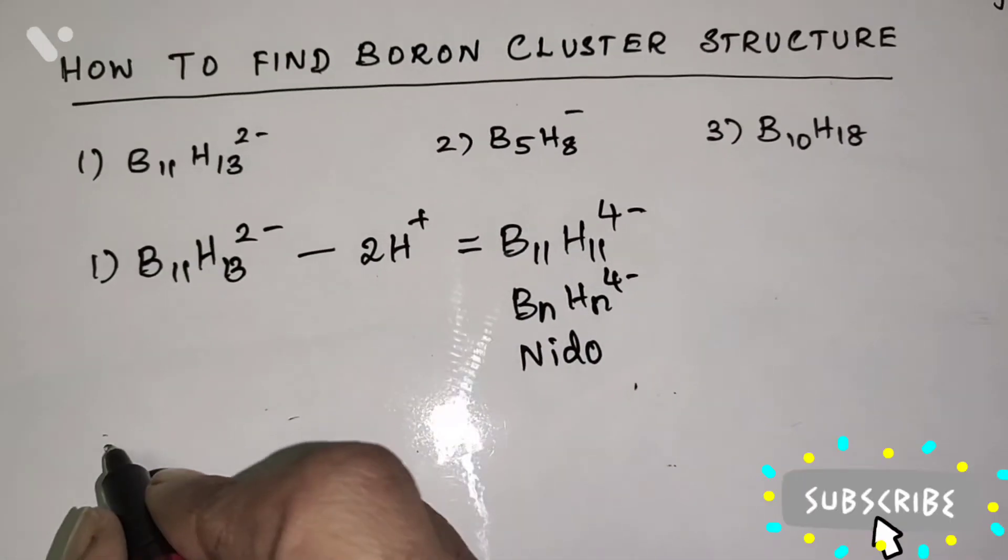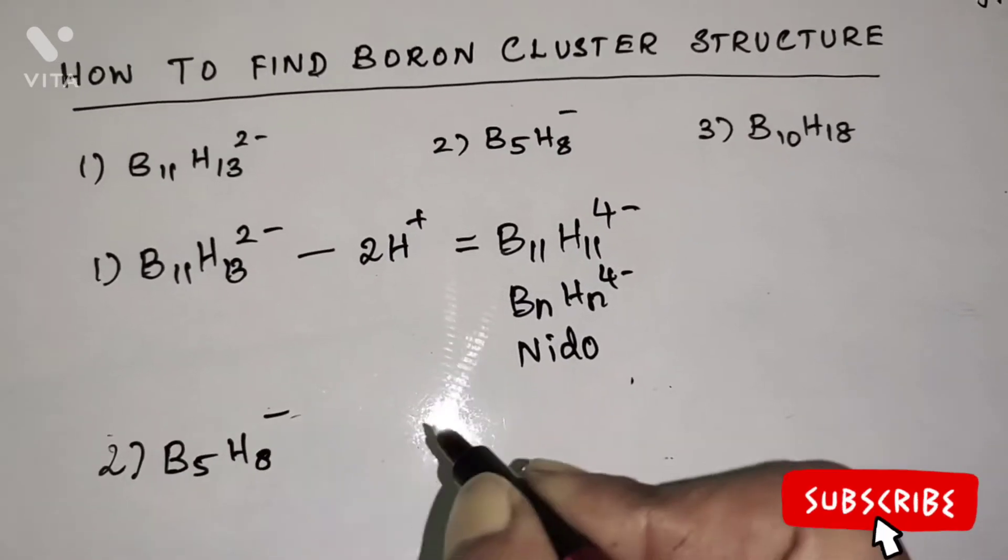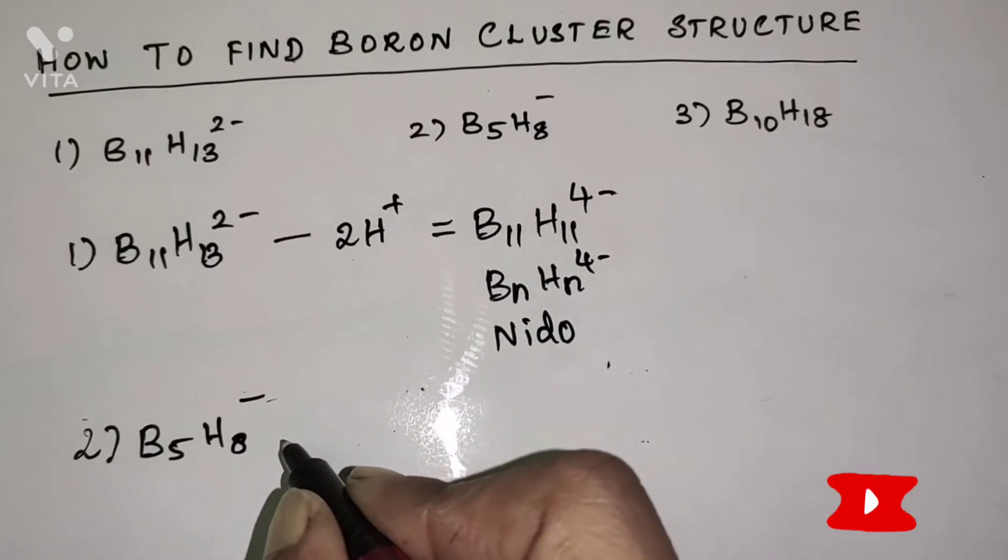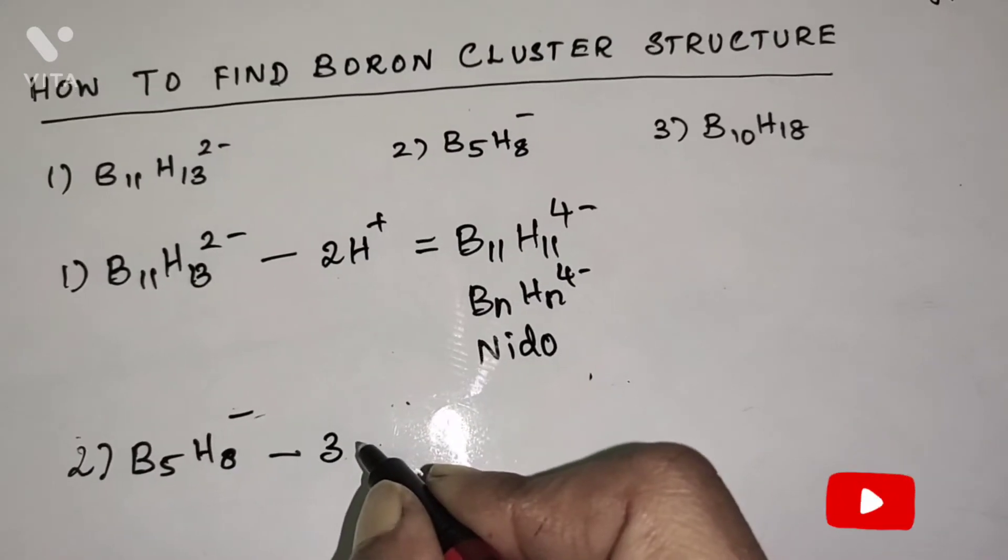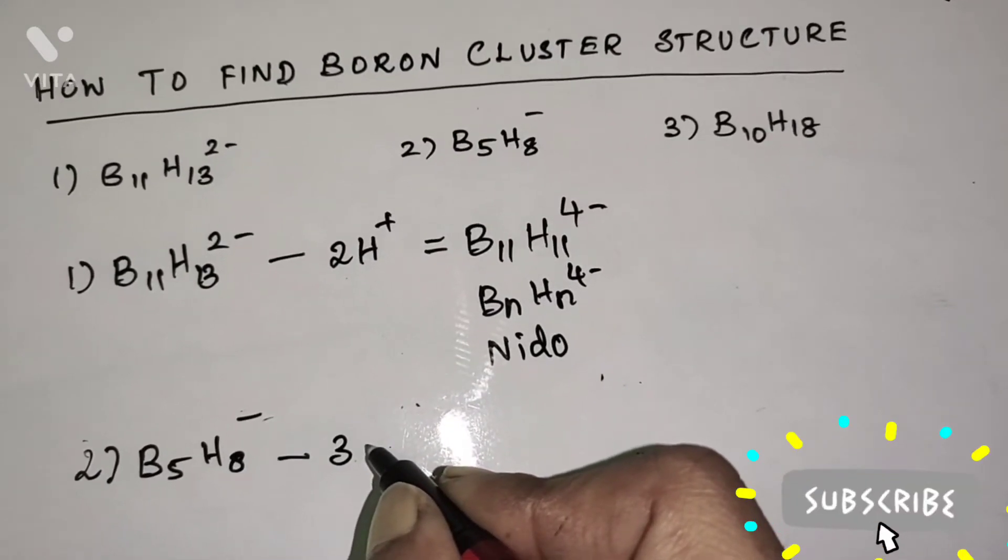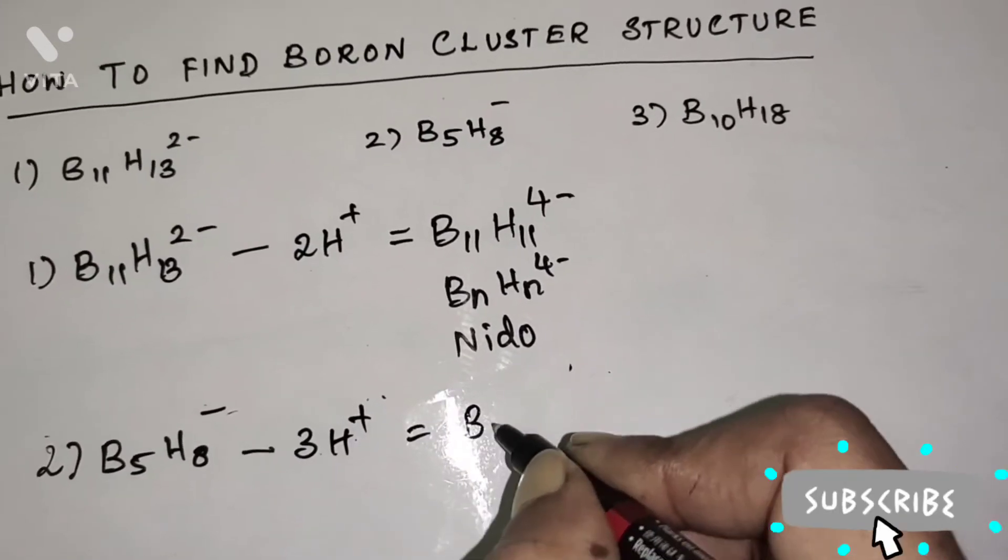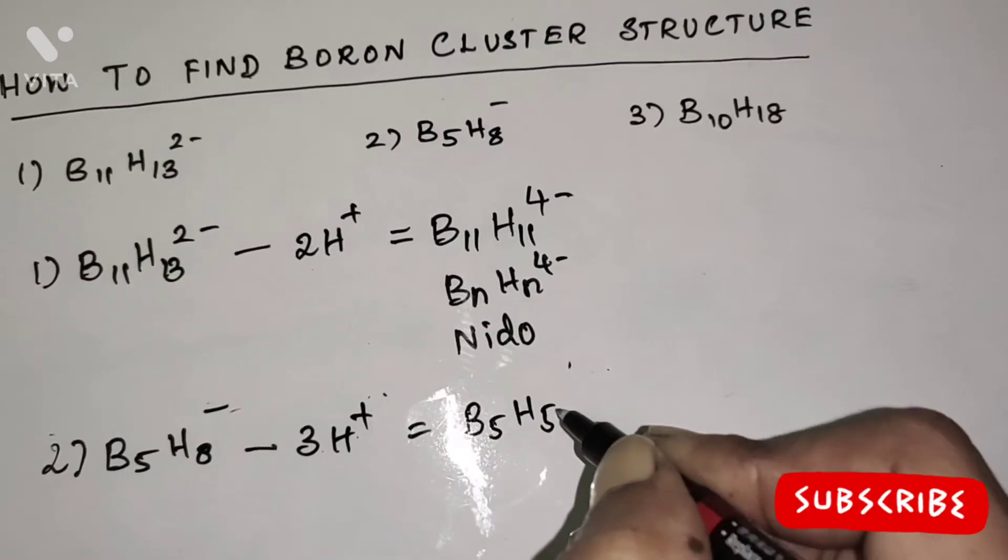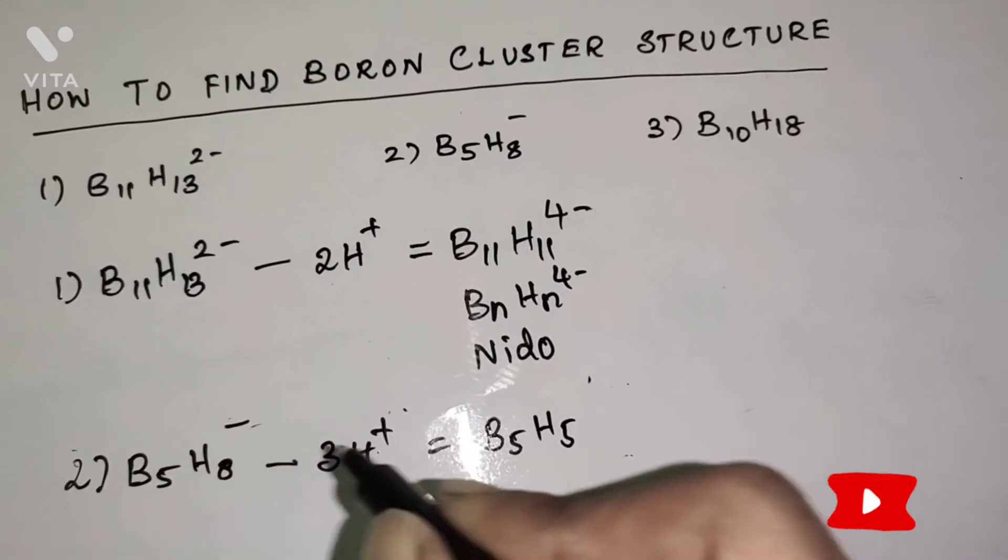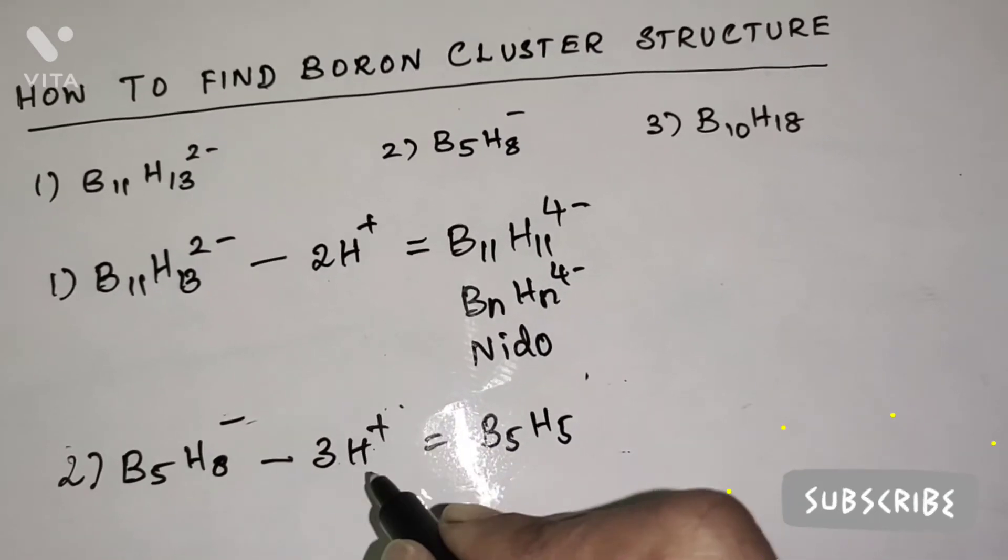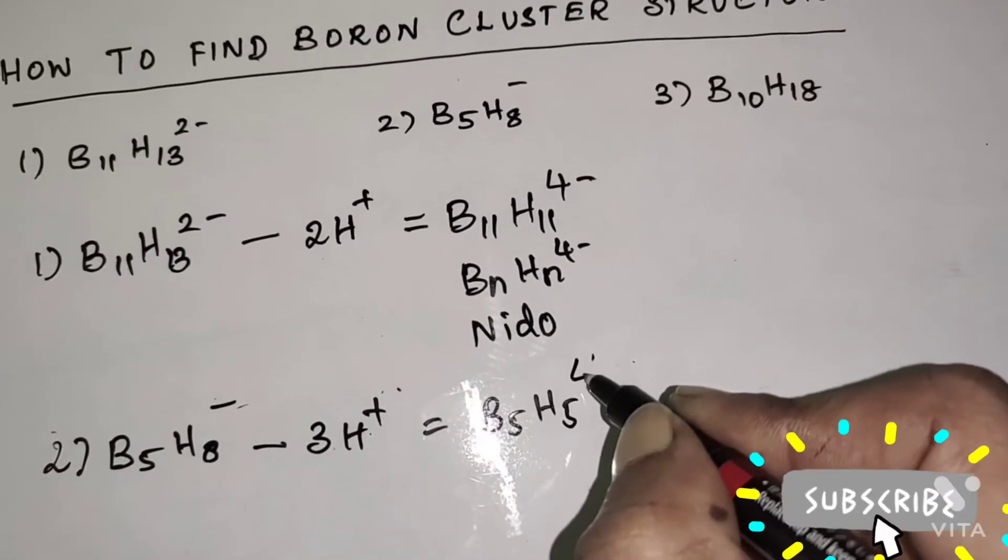Second cluster compound is B5H8 minus. I am going to subtract three H+ ions to make the number of boron and hydrogen atoms equal. Therefore, B5H5, one minus charge already present on the formula and three hydrogen atoms are removed. Therefore, total charge on the formula is 4-.